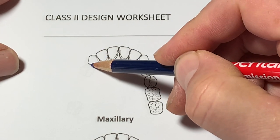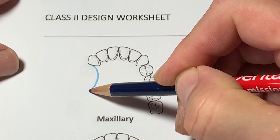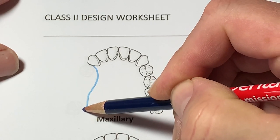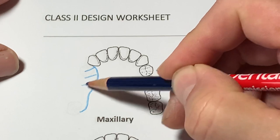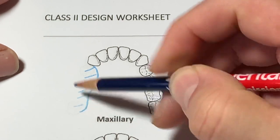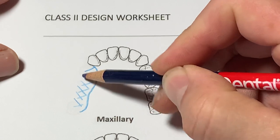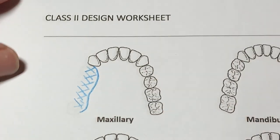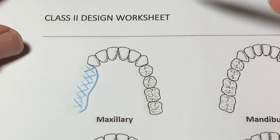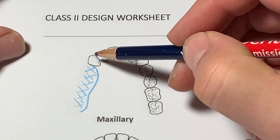The first step is to outline the edentulous area. The Class 2 is the unilateral free end. We adhere the prosthetic teeth to the maxillary major connector with the mesh lattice retention, internal/external finishing line, etc. Step 2 is to identify the terminal abutments or direct retainers.